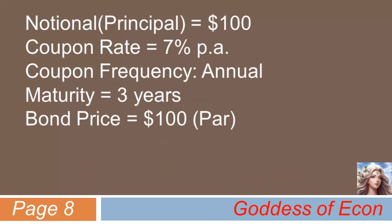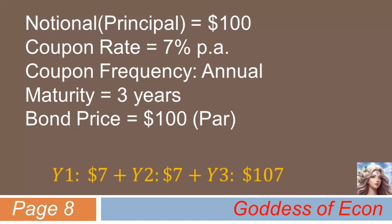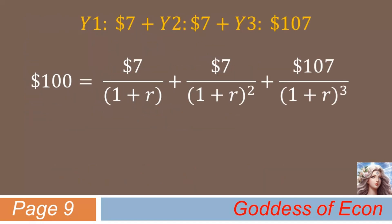Now, let's look at another example. Suppose the bond price and notional are both $100, with 7% coupon paid annually. If the maturity of this bond is 3 years, the cash flows are: $7 in year 1, $7 in year 2, and $7 plus $100 in year 3. The yield to maturity is the discount rate that equates the present value of all future cash flows with the price of $100. Solving for R through trial and error, you will see that R comes out to be exactly 7% in this case. This is the yield to maturity of the bond.